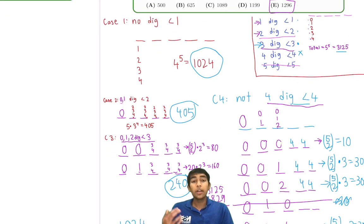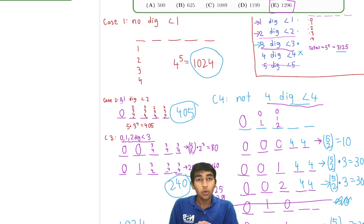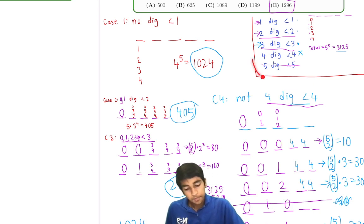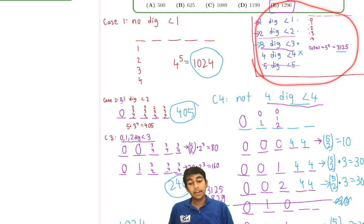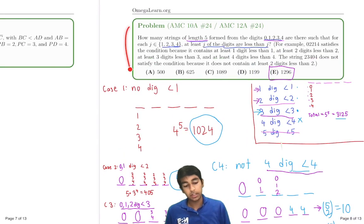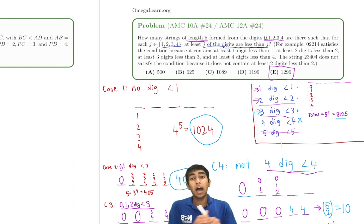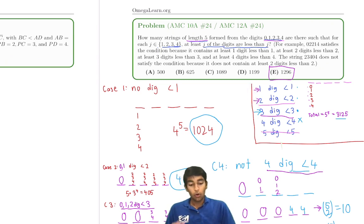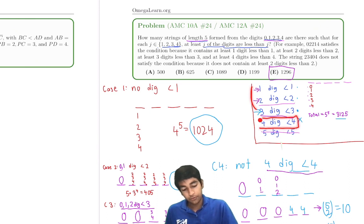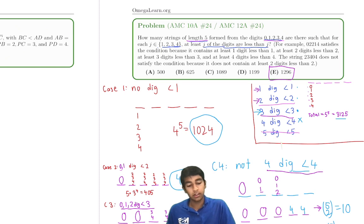The key insight was using complementary counting: instead of directly counting valid strings, we counted each failure case separately. By building each case to exclude overlaps with previous cases, we avoided inclusion-exclusion entirely and got a clean sum.